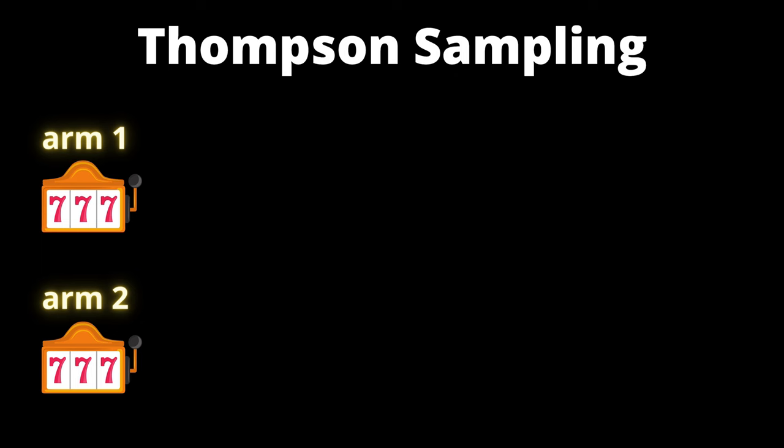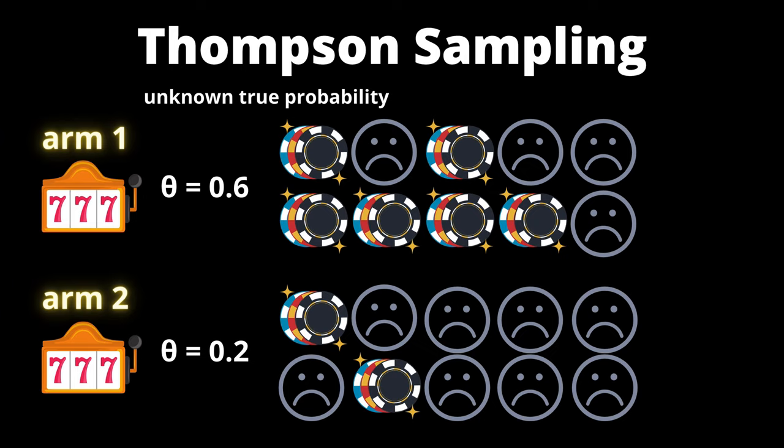Let's start with just two slot machines, or two arms, as an example. Note that we do not have the actual winning probability for two arms, but let's say they are 0.6 and 0.2.